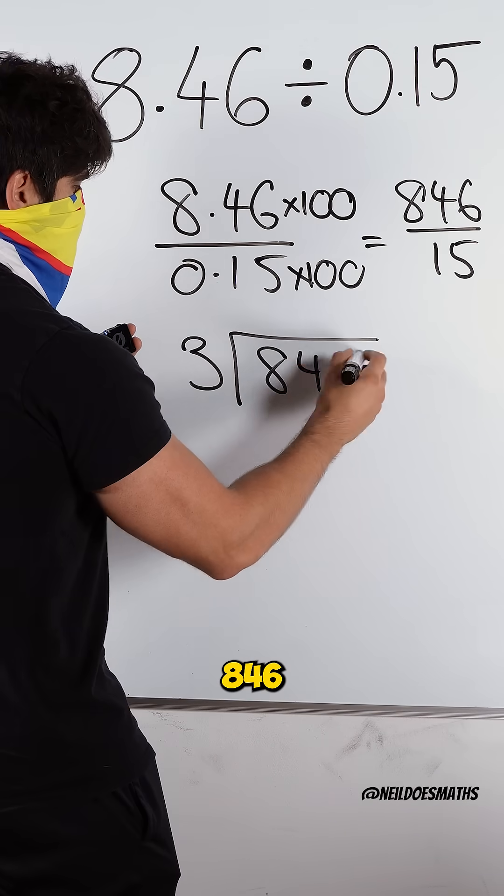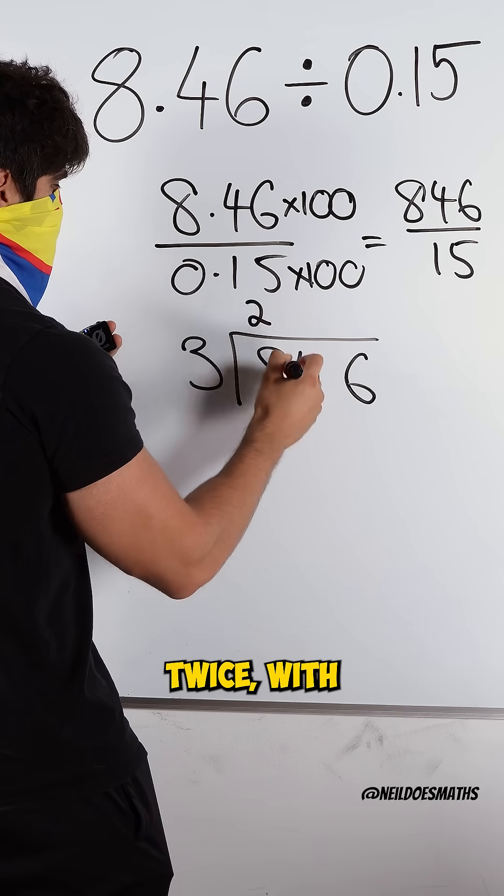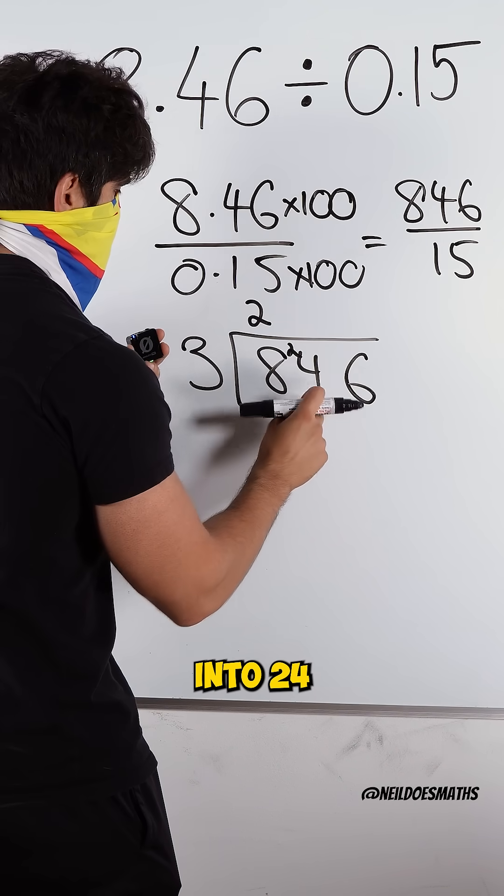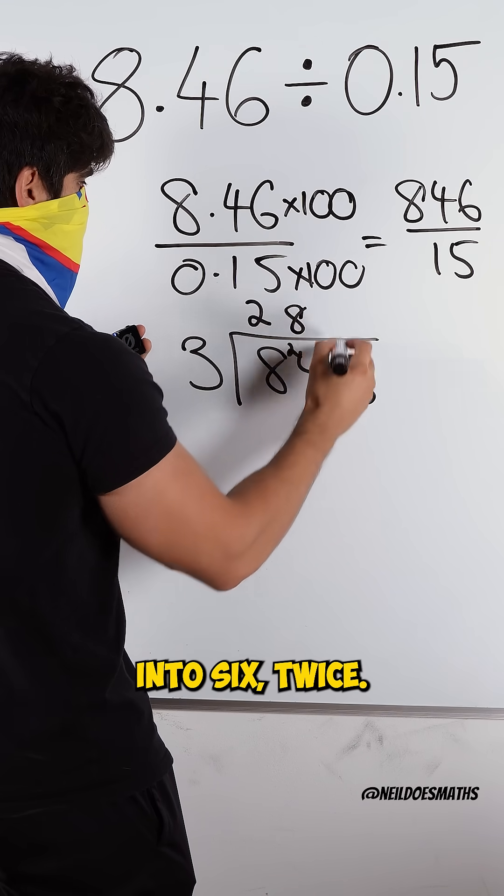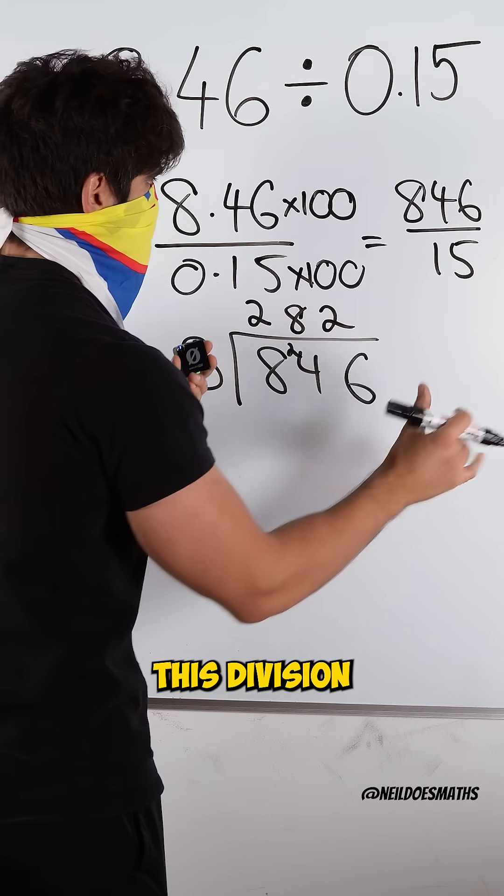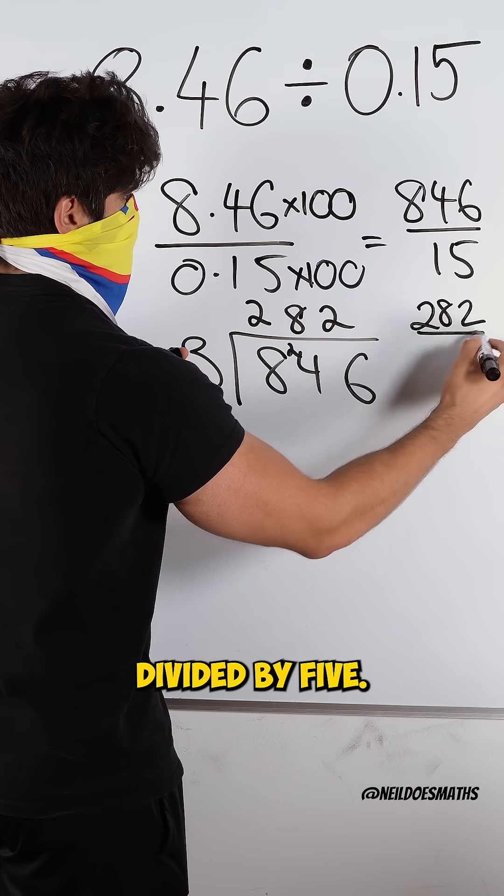How many 3s go into 846? 3 goes into 8 twice with a remainder of 2. 3 goes into 24 eight times. 3 goes into 6 twice. So I can rewrite this division as 282 divided by 5.